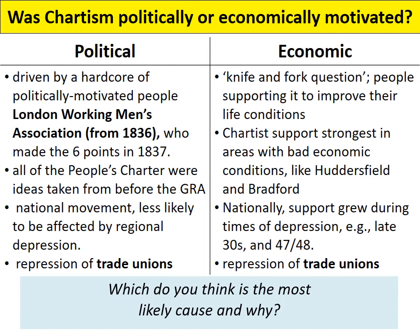There is a summary of political and economic motivations in your info booklet. If you want to read more, page 175 to 176 of your textbook has a section titled 'Why did support for Chartism vary?' — a really useful summary that takes you through it chronologically. As you read, use it to focus on different motivations and think whether they were political or economic. Then the question to consider: which do you think is the most likely cause of Chartism and why? Have an opinion, be brave — historians disagree completely on this, so there's no right or wrong answer.